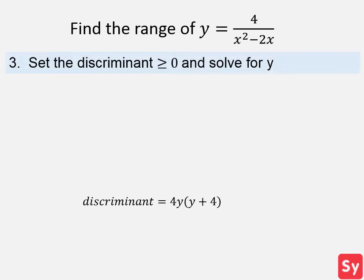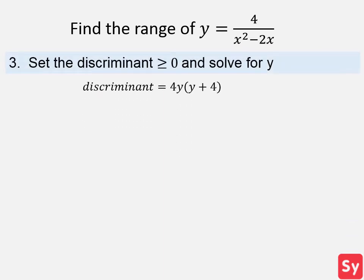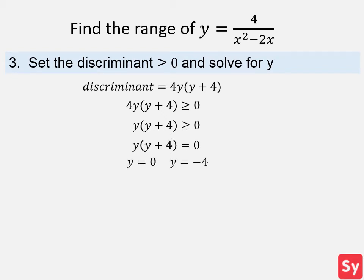Next we set the discriminant greater than or equal to 0 and solve for y. So we set 4y times y plus 4 greater than or equal to 0. Now we can divide each side by 4. To solve this inequality, first we set y times y plus 4 equal to 0 and solve for y. We get y equals 0 and y equals negative 4. Next, we want to find the values of y for which the inequality holds. So we test values in the regions y less than or equal to negative 4, negative 4 to 0, and y greater than or equal to 0. You can do this on your own and you'll find that the inequality holds for when y is less than or equal to negative 4 or y is greater than or equal to 0.